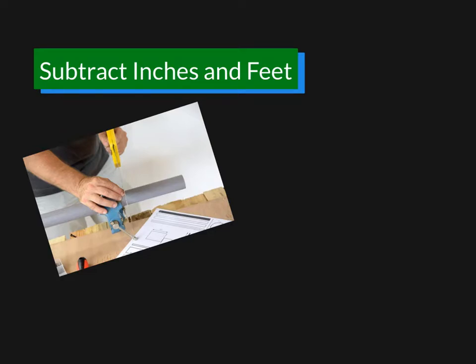Sometimes you subtract measurements in feet and inches. So for example, if you cut a piece from a length of pipe and you want to know how much is left. Let's say that the pipe is 2 feet 9 inches and you're going to cut off 1 foot 7 inches.